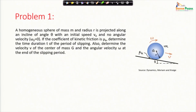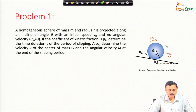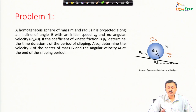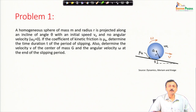Let us proceed to some problems. This problem is from the book of Merriam and Craig. A homogeneous sphere of mass m and radius r is projected along an incline of angle theta with an initial speed v-naught and no angular velocity, meaning omega-naught is 0. If the coefficient of kinetic friction is mu_k, determine the time duration t of the period of slipping. Initially because of friction it will slip — it is released with an initial velocity to the center of mass and no angular velocity, so it will slip until at time t it starts rolling.